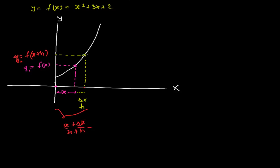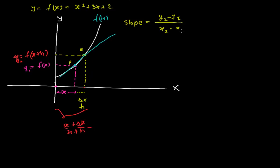Now let's draw a secant line — the line joining these two points. Let's call the first point P and the second point Q. We need to find the slope of this secant line, which tells us how the function f(x) is changing between points P and Q. The slope equals the change in y divided by the change in x: (y2 - y1) / (x2 - x1). Here y2 = f(x+h), y1 = f(x), x2 = x+h, and x1 = x.